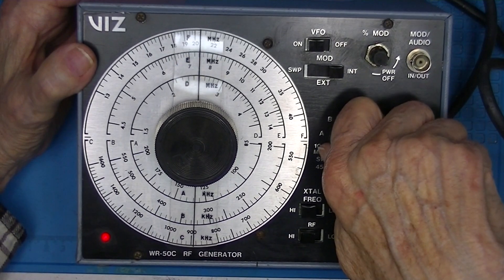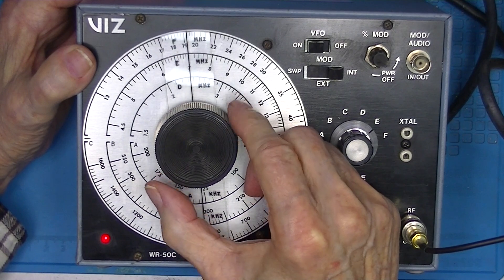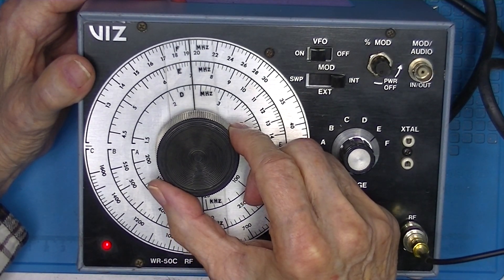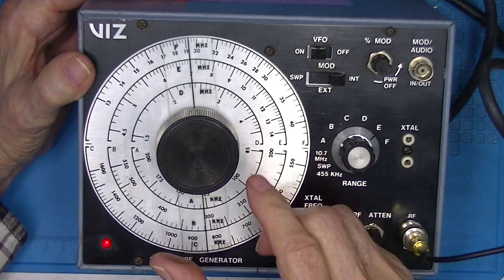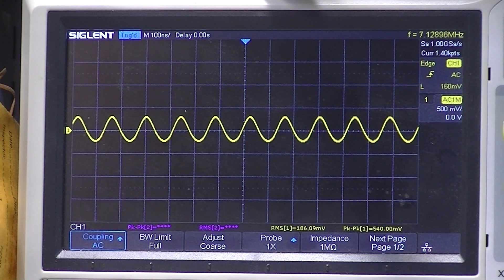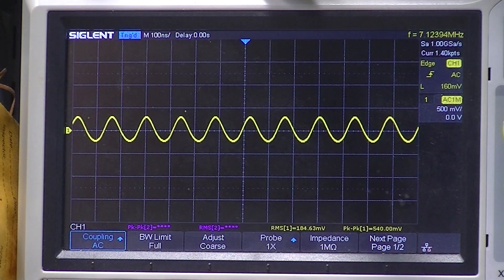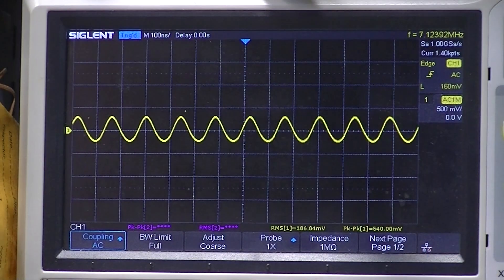Band E. And let's see, 7 megahertz. It's pretty close to the center. And the output's dropped to half a volt peak to peak. And it's 7.12 megahertz.